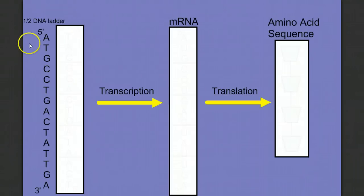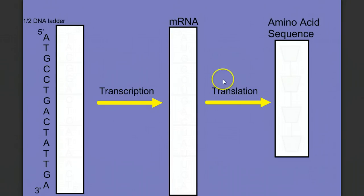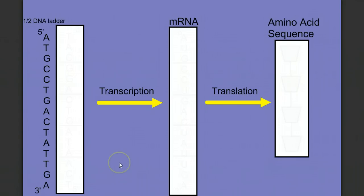Now I have a task for you — you're going to need a codon chart to finish this. I've given you one half of the DNA ladder. What I want you to do is three things: first, give me the other half of the DNA ladder; then use that as the template to build your complementary messenger RNA strand during transcription; and then get your codon chart out and translate that messenger RNA strand into an amino acid sequence. Go ahead and pause the video now, take your time, work through it, and then start the video back up again.